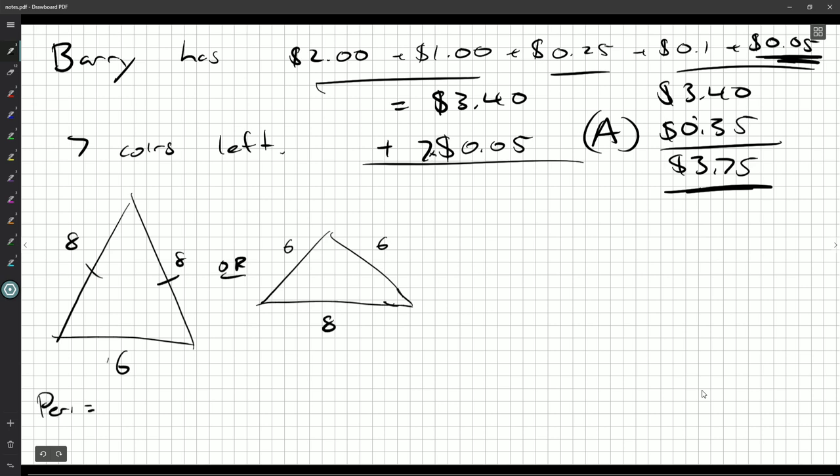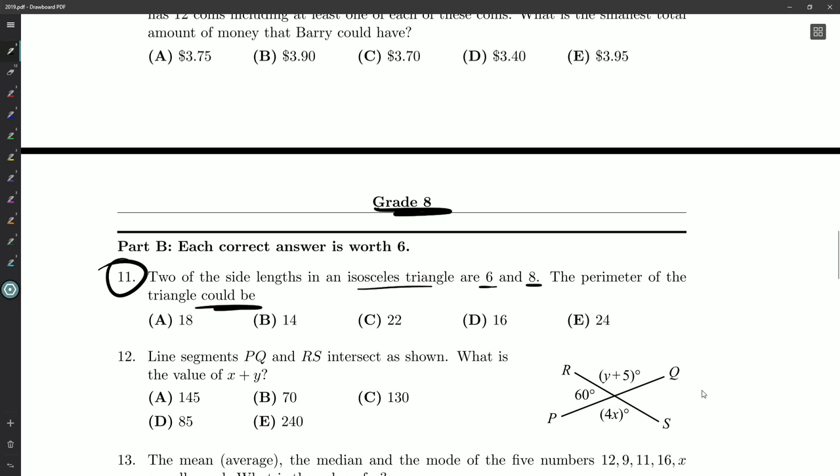8, 8, and 6 would be 22, or the other possibility 6, 6, and 8, so that's 12 and 8, 20. So those are the two possible perimeters. Do we see any of them? I see 22, I don't see 20, so we're going to have to write C.